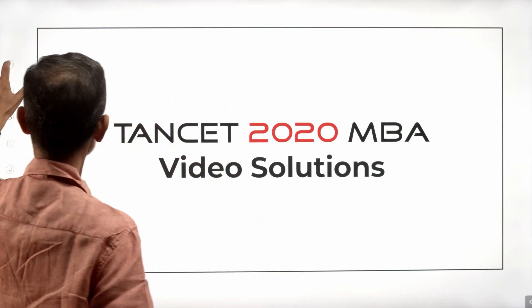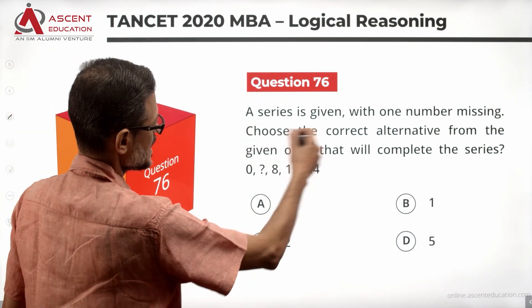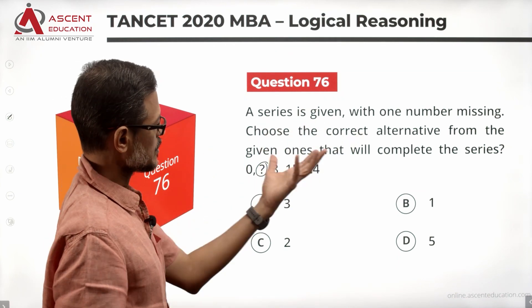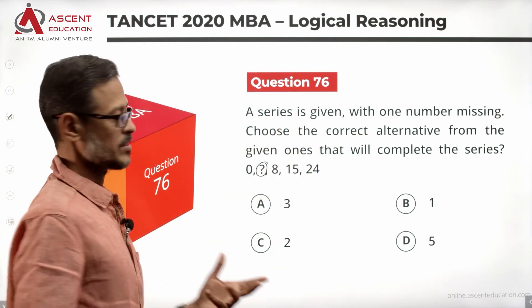It's very easy. Quickly take a look at the sequence. A series is given with one number missing. Choose the correct alternative from the given ones that will complete the series.